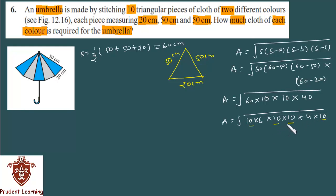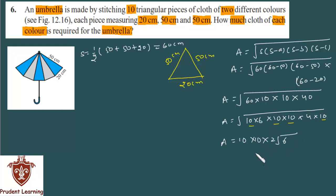Simplifying: 60 is written as 10 into 6, 40 as 4 into 10. We have four 10s inside the root, so 10×10 = 100 comes outside as 10, and another pair gives another 10. The square root of 4 is 2, leaving root 6 inside. So area equals 200√6 square centimeters.